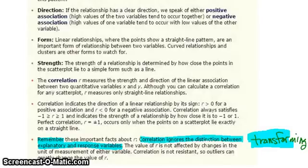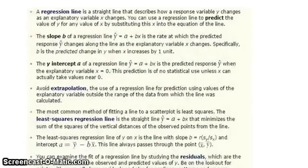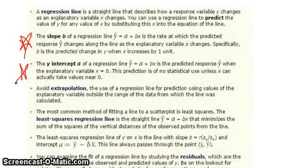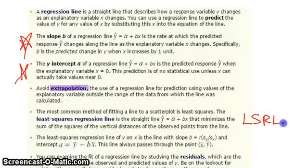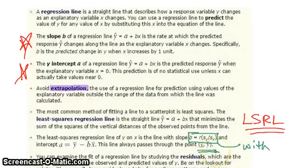Now let's move on to Section 3.2. When we talk about a regression line, let's keep in mind we have our slope and our y-intercept. What we want to make sure we avoid whenever possible is extrapolation. The model we use is called the least squares regression line, which we always refer to as the LSRL. Don't forget — on your green formula sheet, you have the equation that allows you, with the mean point, to calculate our LSRL.